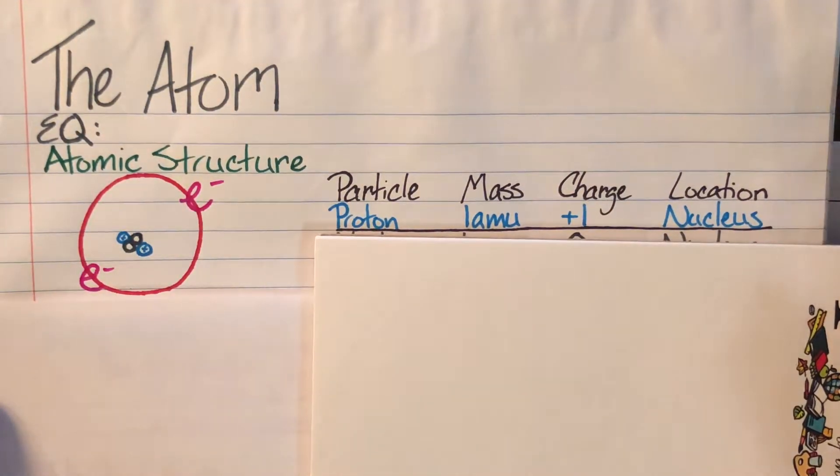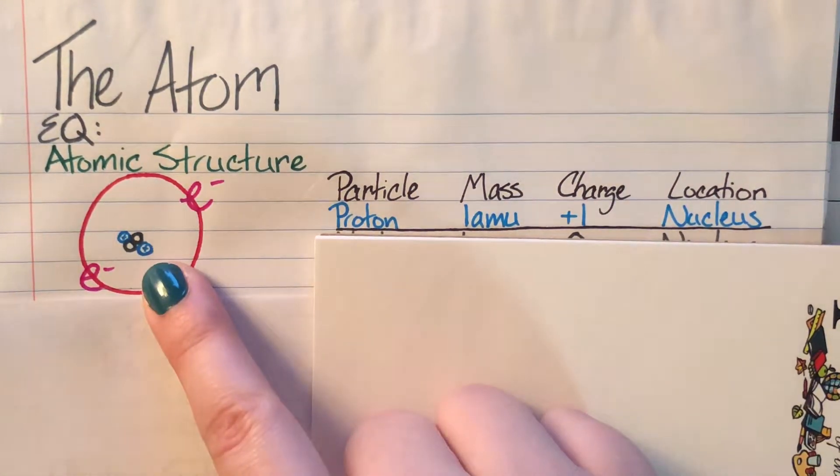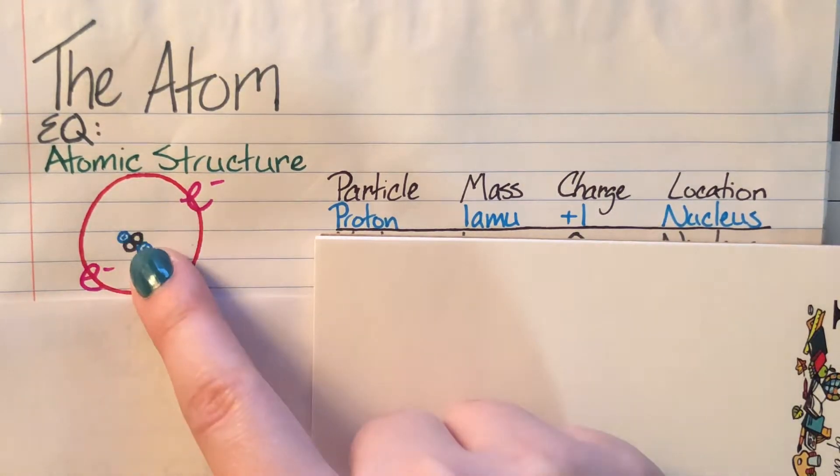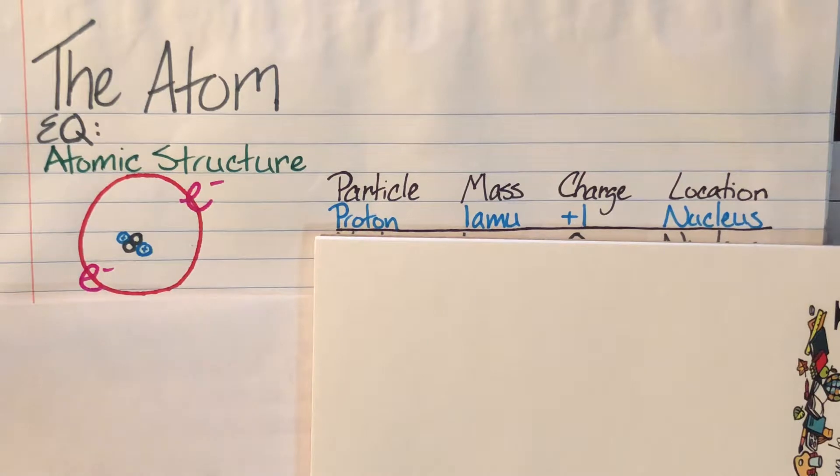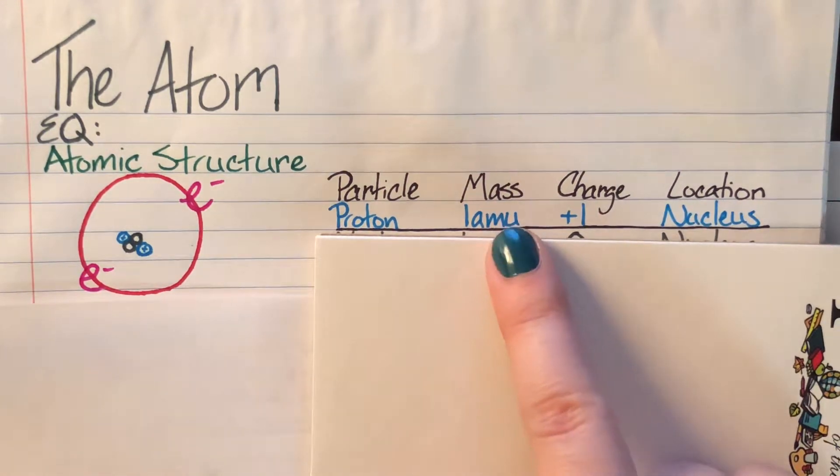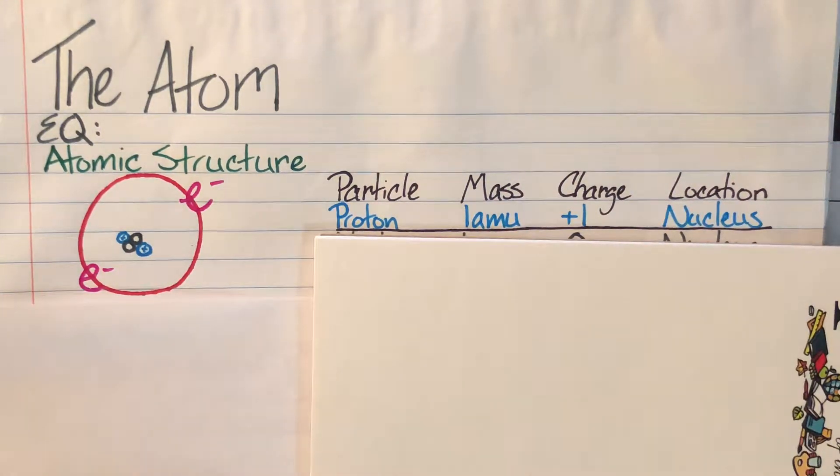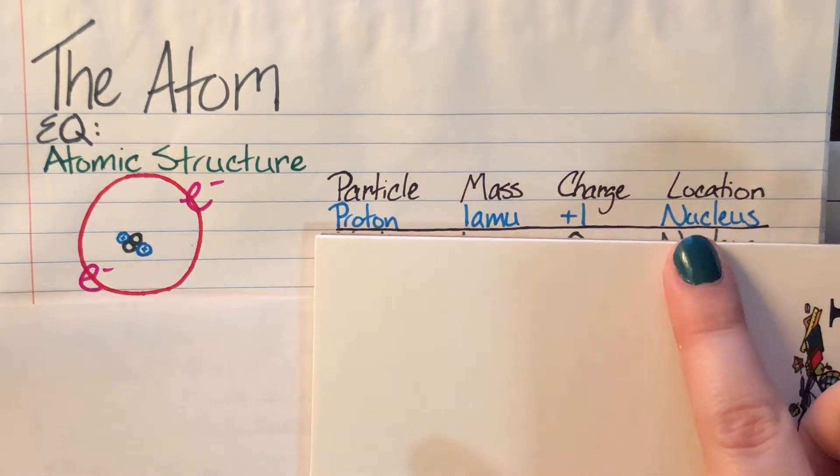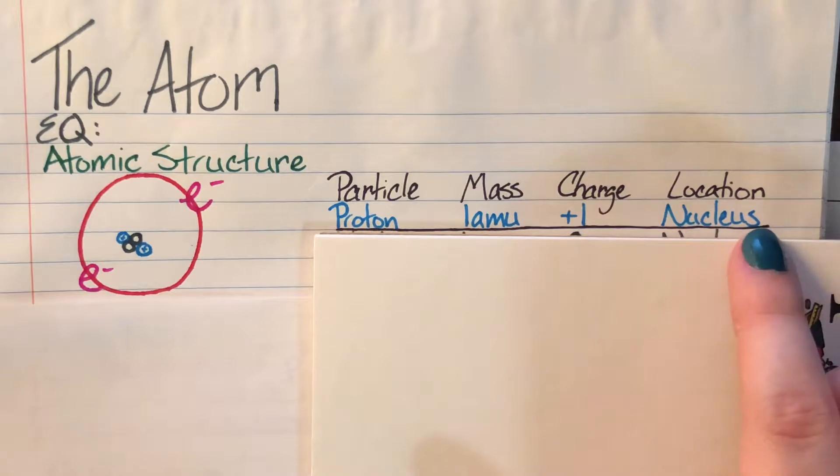Our proton is going to be the thing that is in blue. It is in the center of our atom. It has a mass of one AMU. AMU stands for atomic mass unit, and it has a charge of plus one, and its location in the center is what is called the nucleus.